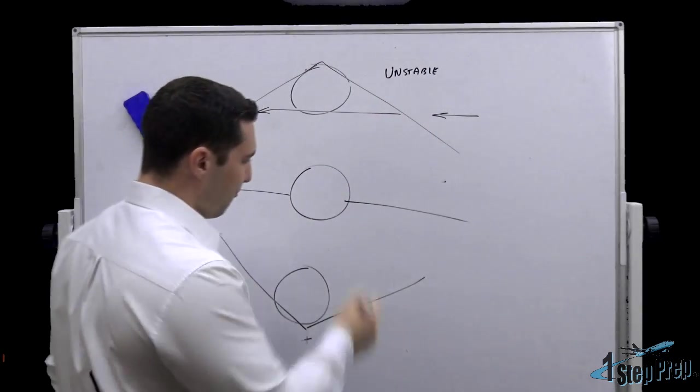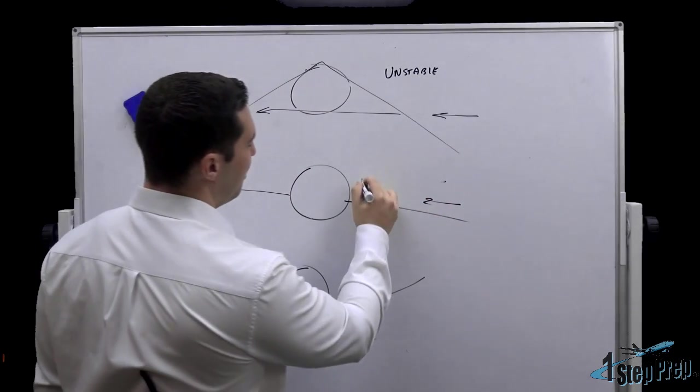Manufacturers are looking for a good mix of stable and unstable that will yield good aircraft controllability. Now, over here, we have nothing. So this is what's said to be neutral.